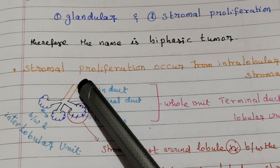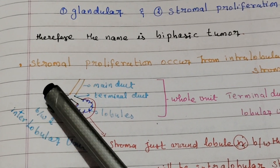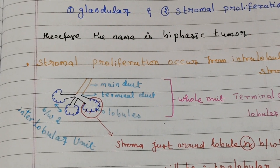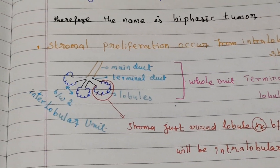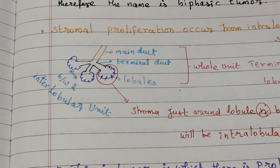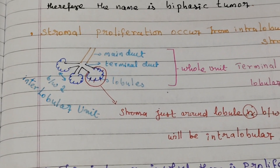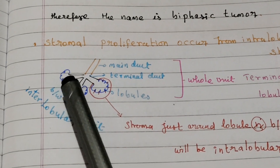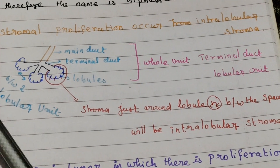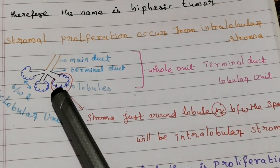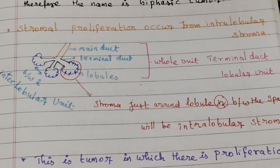This one is the main duct, and this one is the terminal duct. The terminal duct is attached to the lobules. The whole unit is called the terminal duct lobular unit. Now the stroma involved in fibroadenoma is the intralobular stroma. Between the two lobules is the interlobular stroma, while the stroma within the lobule space is the intralobular stroma.